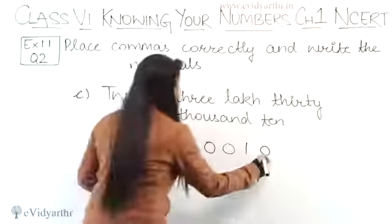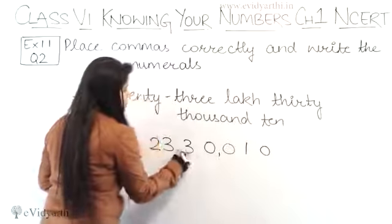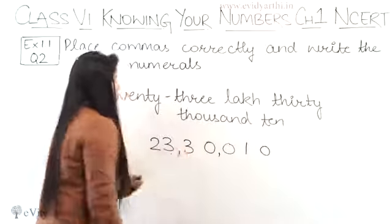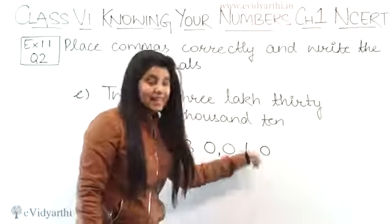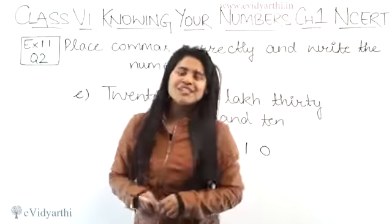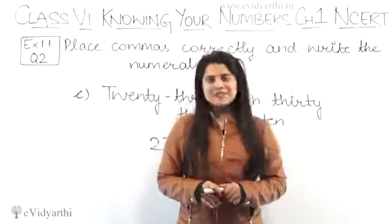Now the number we have is 23, 30, 010. Since lakh was here, we will place commas according to Indian system. So 3 digits first, comma, 2 digits first, comma. So it became 23 lakh, 30,010. So this was the E part. This was the last part of this question. Now let's come to the next question.